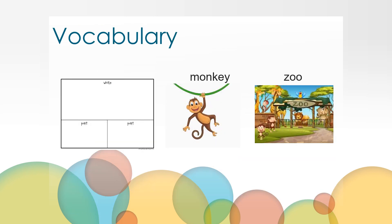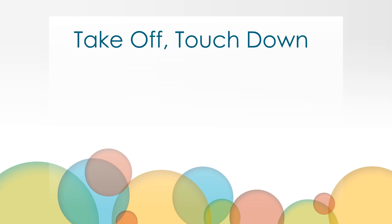Here are some of the vocabulary words you'll hear in our lesson today that you'll want to be familiar with: whole, part, monkey, and zoo. We'll play a quick game of takeoff touchdown to help you make connections to the vocabulary words, to get you moving, and help you begin thinking about the story we'll be reading today.